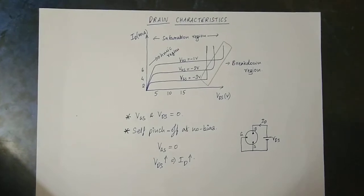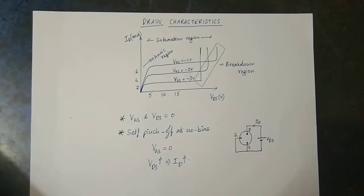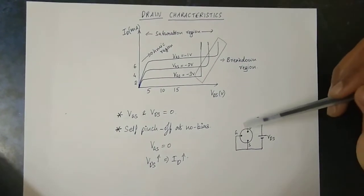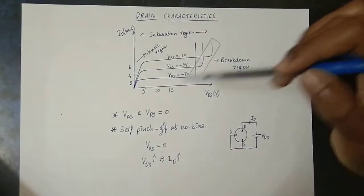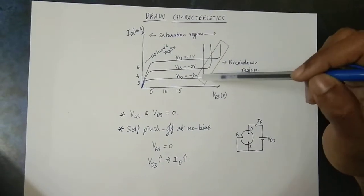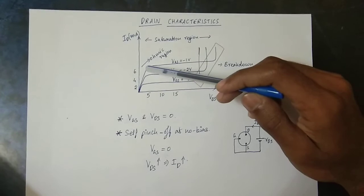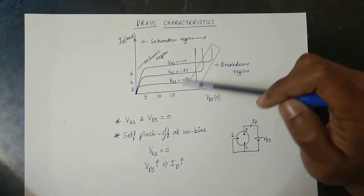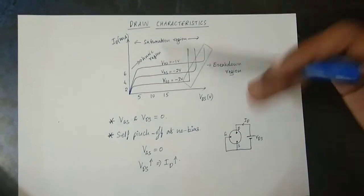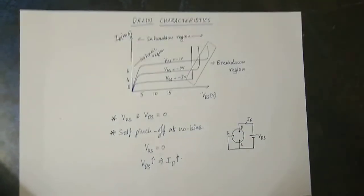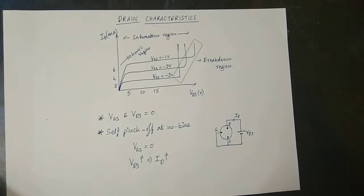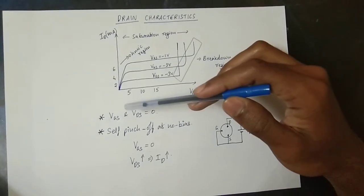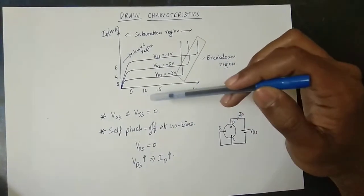Now let's look at the drain characteristics of JFET. The output characteristic graph plots VDS on the x-axis and ID on the y-axis, similar to the BJT output characteristics. There are two main regions: the ohmic region and the breakdown region. Increasing VGS increases ID, as input voltage and reverse voltage are raised.